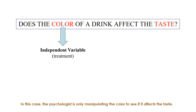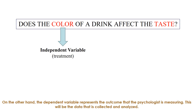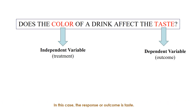In this case, the psychologist is only manipulating the color to see if it affects the taste. The dependent variable, on the other hand, represents the outcome that the psychologist is measuring — this is the data that is collected and analyzed. In this case, the response or outcome is taste.